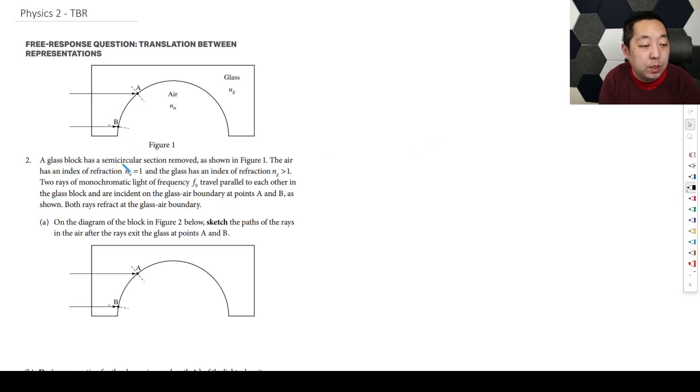So here we have a glass block has a semicircular section removed as shown in the figure. The air has an index of refraction, so this is going to be based off of optics. The glass has an index of refraction greater than 1. Two rays of monochromatic light of frequency F0 travel parallel to each other in the glass block and are incident on the glass boundary at points A and B. Both rays refract at the glass-air boundary.